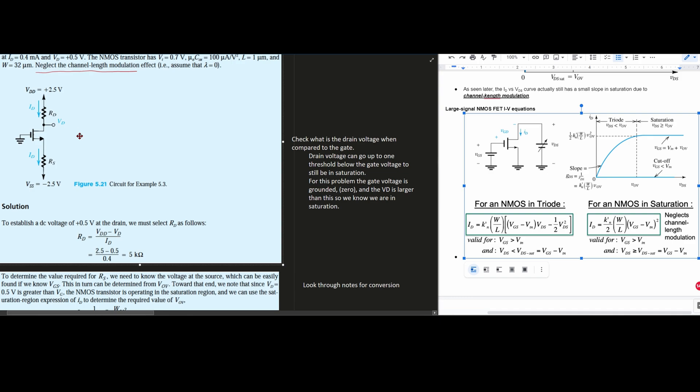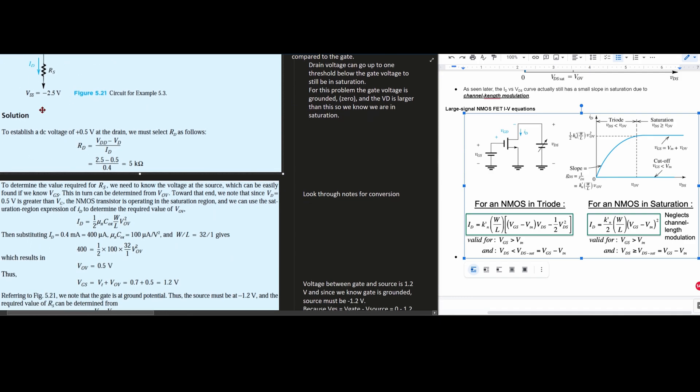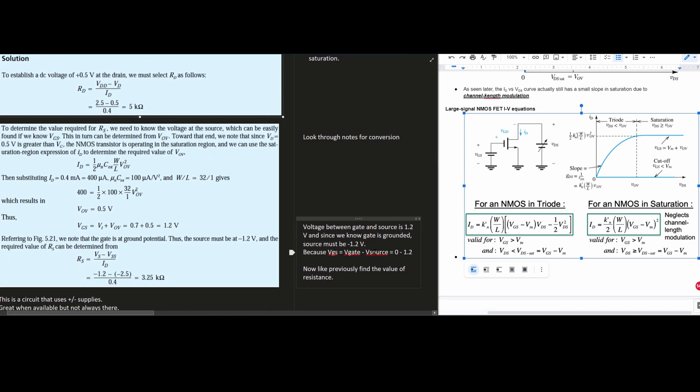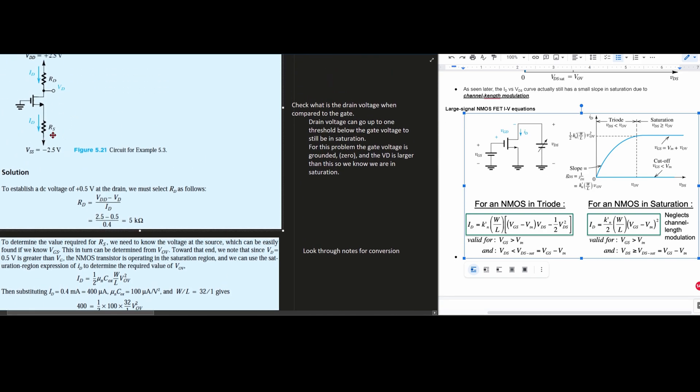We can further prove this by saying that VGS, the voltage GS, is going to be equal to the voltage gate minus the voltage source. We have our gate minus the next part which is our voltage source. So we basically have zero minus 1.2, giving us negative 1.2 volts.